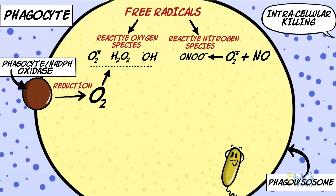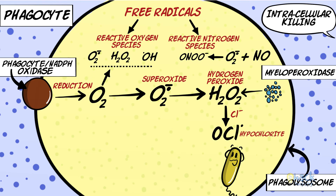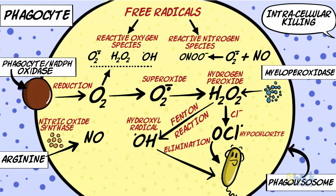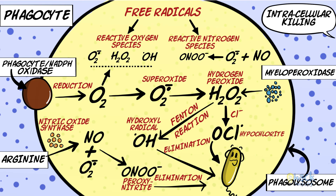Phagocyte oxidase present in the cytoplasm translocates to the membrane of the phagolysosome and reduces oxygen to a superoxide anion. The superoxide anion is converted to hydrogen peroxide, which is further converted to hypochlorite by myeloperoxidase. Hydrogen peroxide is also converted to a hydroxyl radical. Hypochlorite and hydroxyl radical are powerful destructive agents helping in elimination of microbes. Further, nitric oxide derived from arginine by the action of nitric oxide synthase combines with superoxide to form a free radical called peroxynitrite, which also participates in microbial killing. The free radicals target the lipids, proteins, and nucleic acids of microbes, thus killing them.